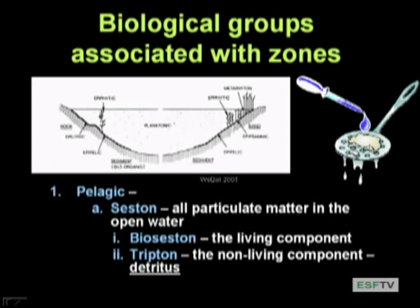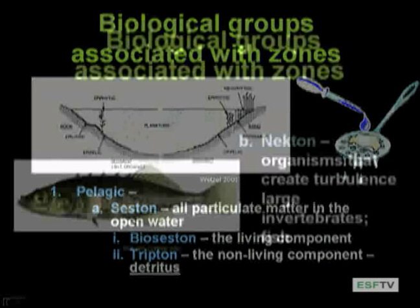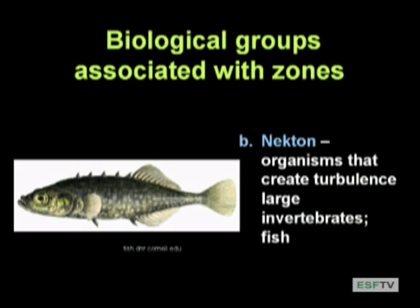We can get a little more specific about the components of seston. Some of the bioceston particles include stuff that a lot of you are really interested in — nekton: organisms that can swim and control their own fate as to where they are in the water column. They create turbulence, move around, and aren't moved by currents. This includes fish, and also some large, robust invertebrates that can swim powerfully and avoid being moved around.